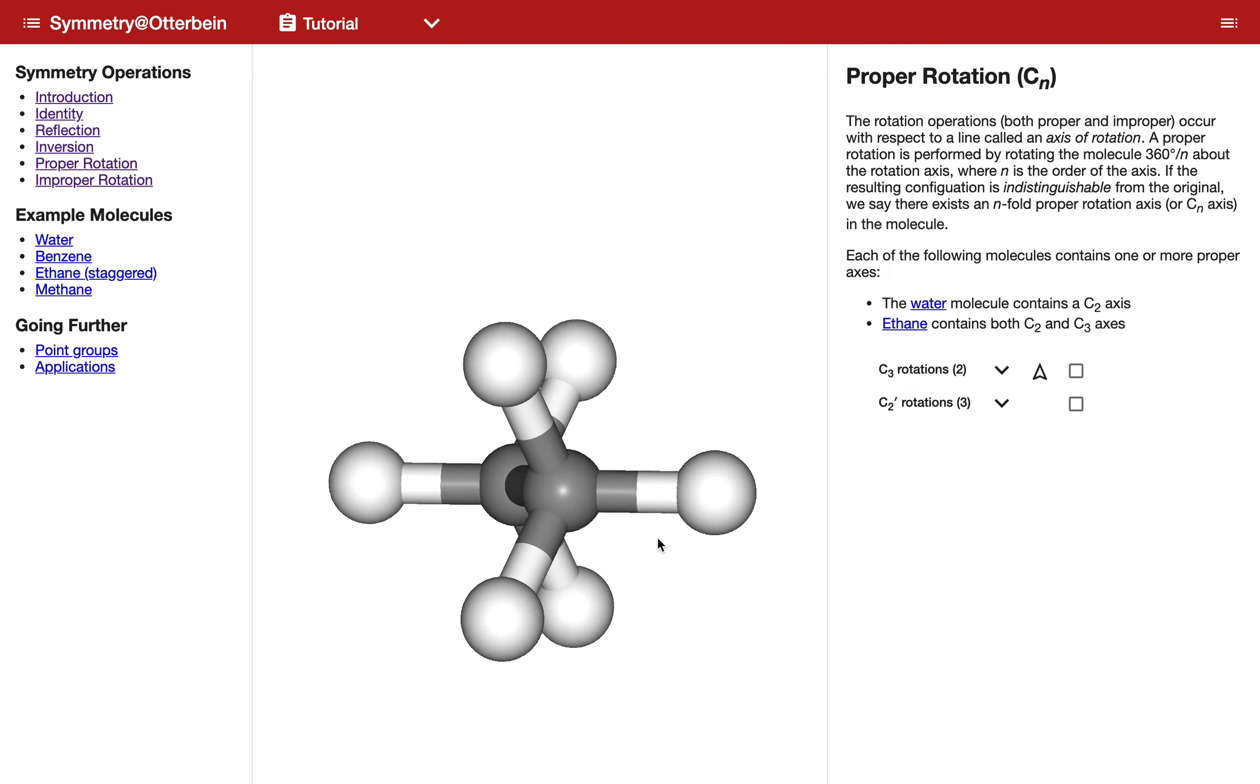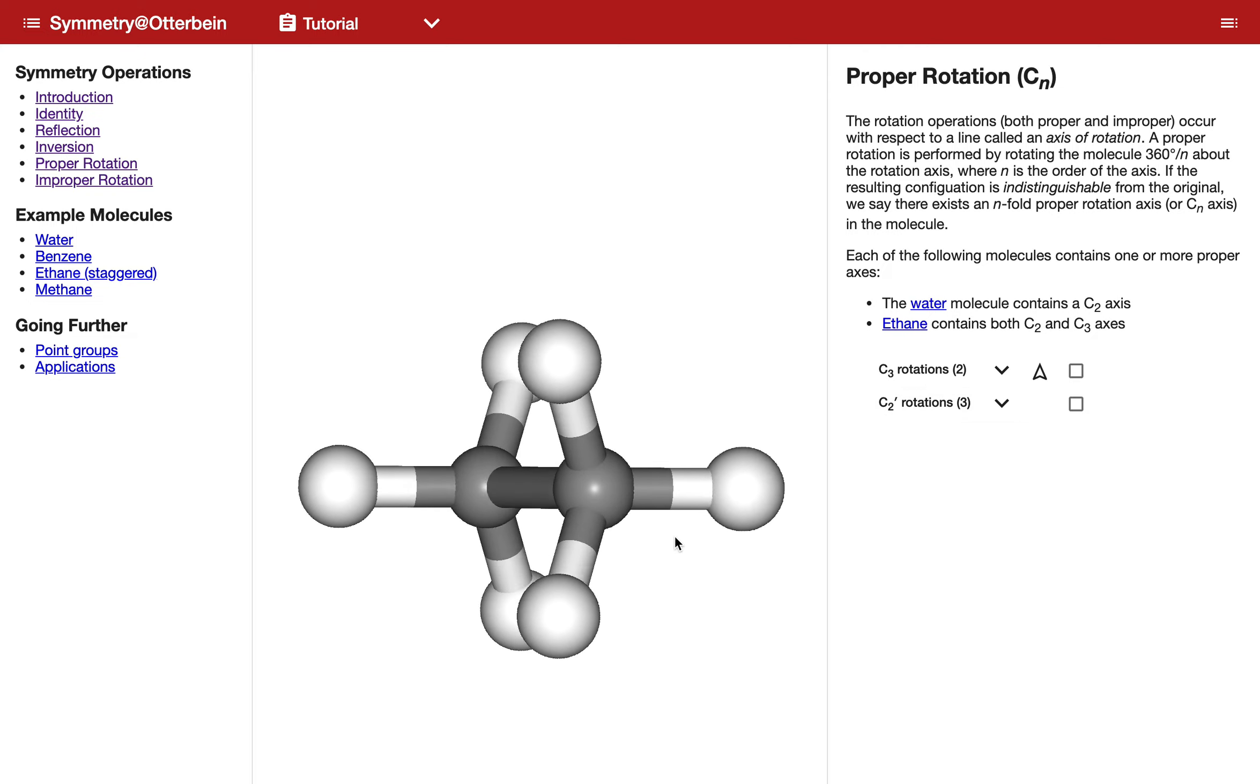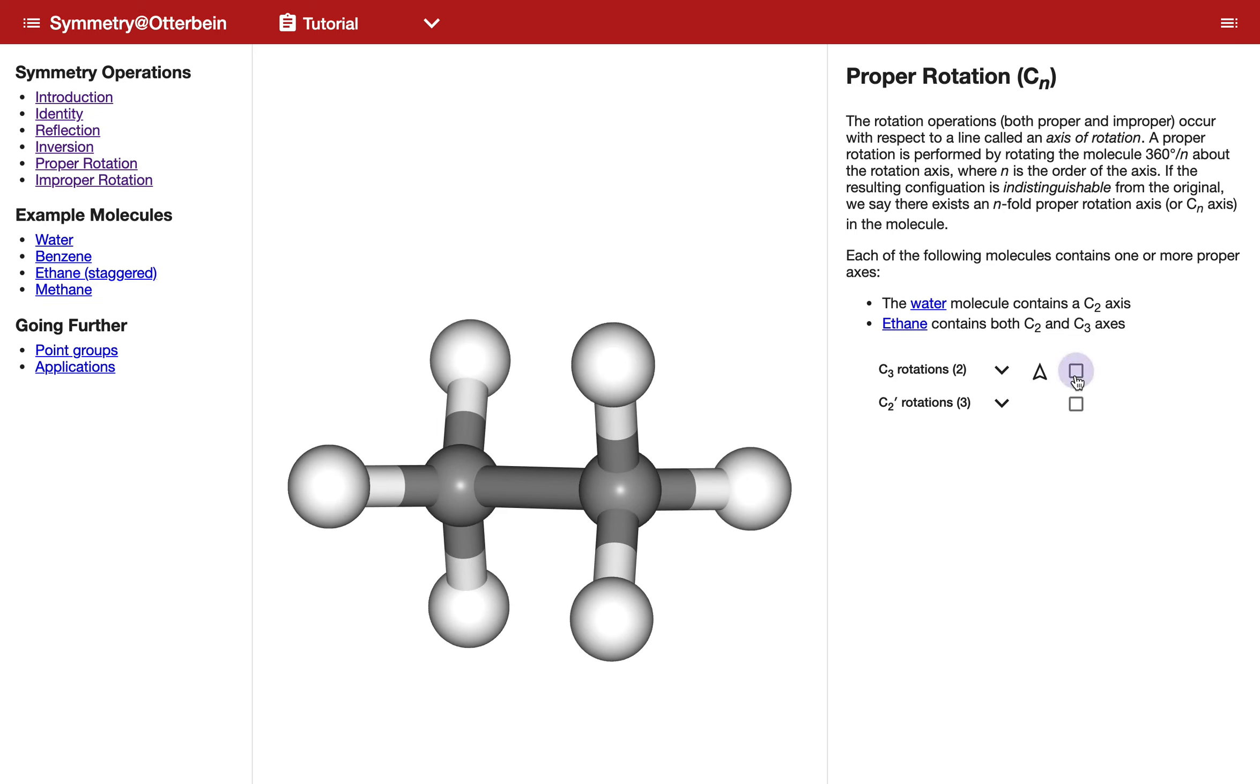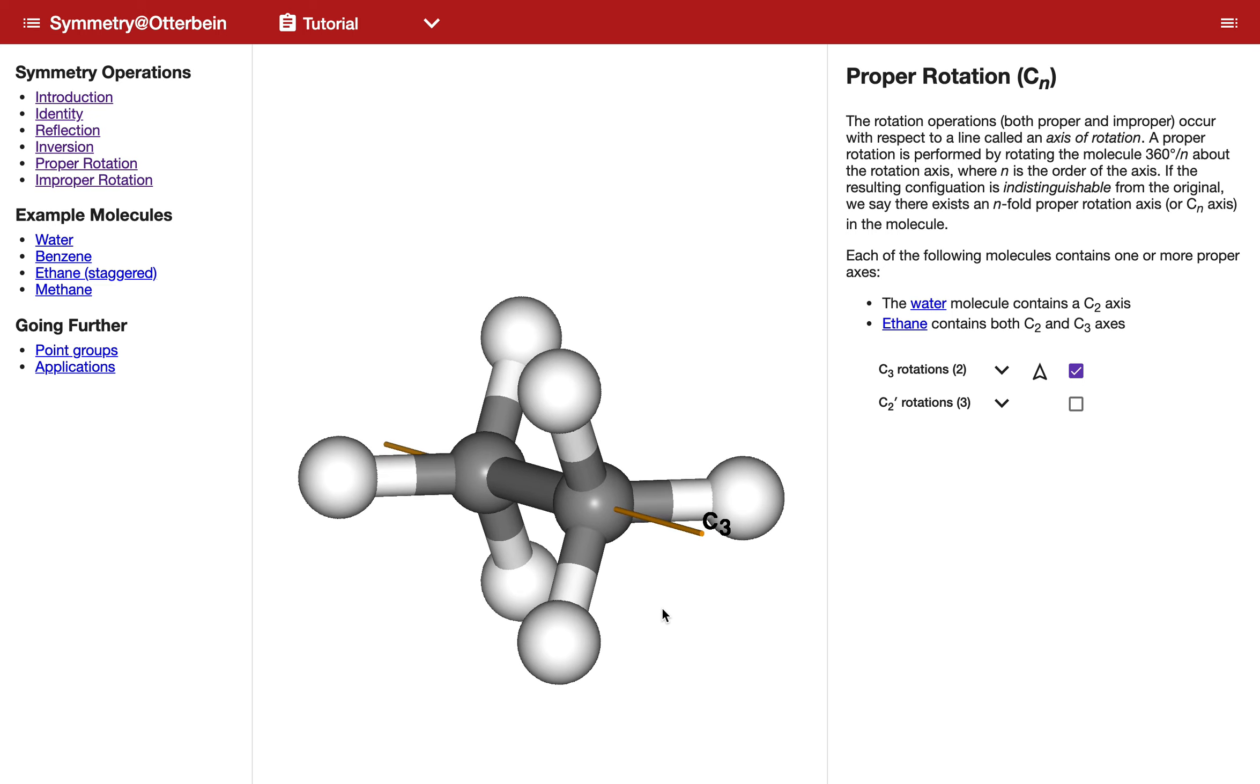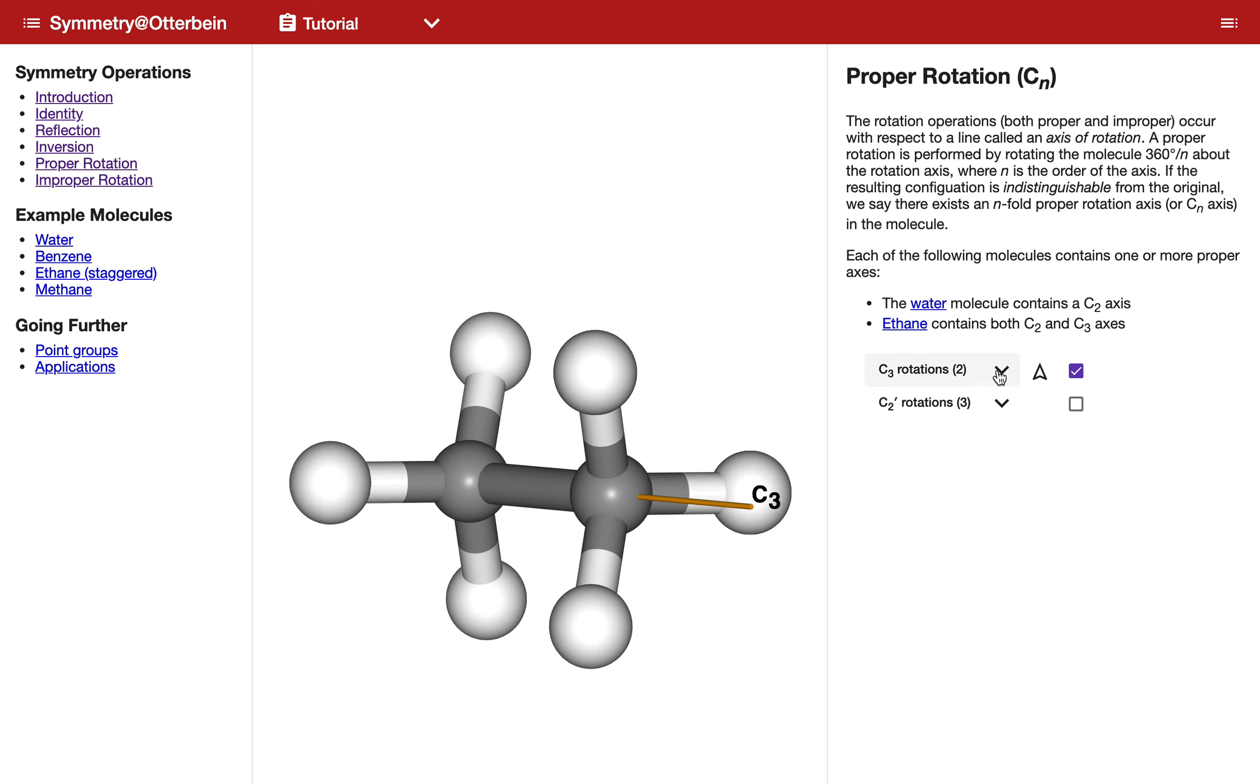The C3 axis I think is pretty easy to see. It's the one that goes right down the carbon-carbon bond, so if I click on that, you can see there is the C3 axis shown to us. And if we were to click on its rotation, you can see the rotation that takes the molecule into an equivalent configuration.